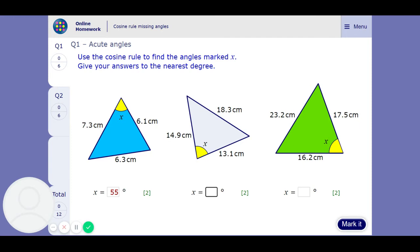So we're going to have 14.9 squared plus 13.1 squared take away 18.3 squared all over 2 times 14.9 times 13.1 inverse cos you're going to get 81 and then last one.